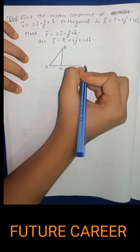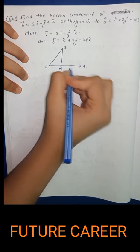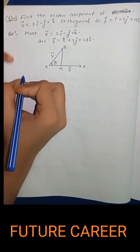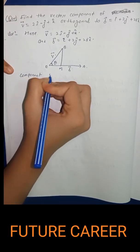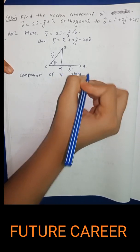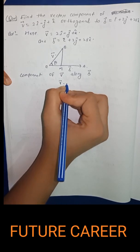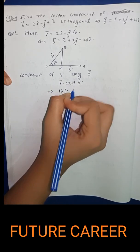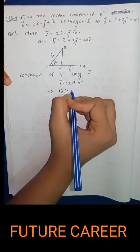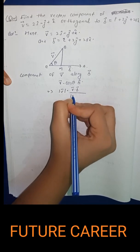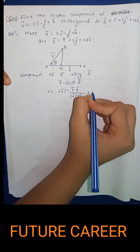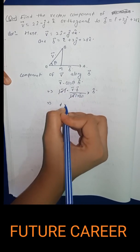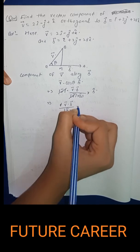Here we have points O, B, M, and A. This is our b vector and this is v vector, and the angle between them is theta. The component of v vector along b vector is: magnitude of v vector times cos theta, which equals v dot b upon magnitude of b, into b cap.